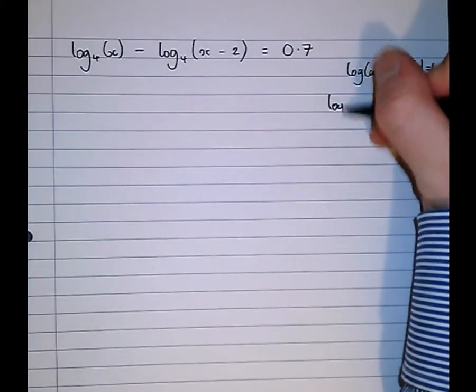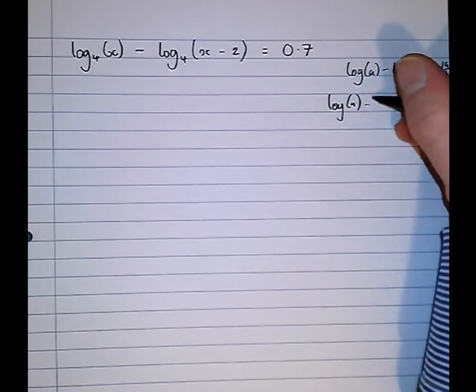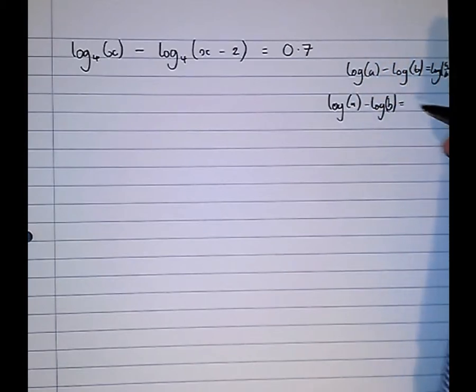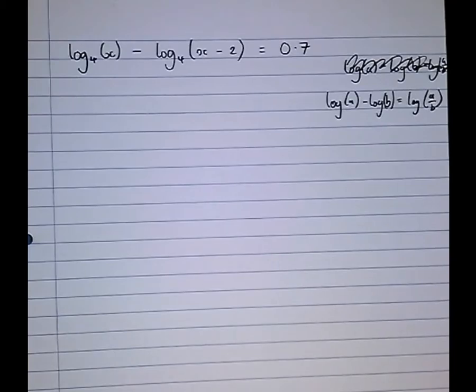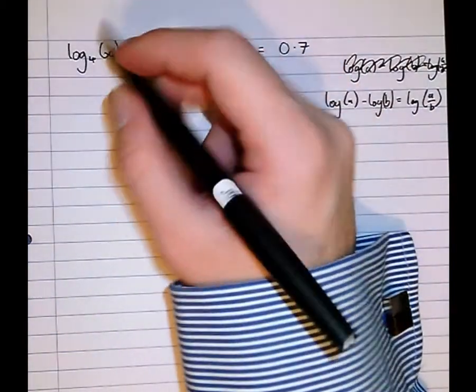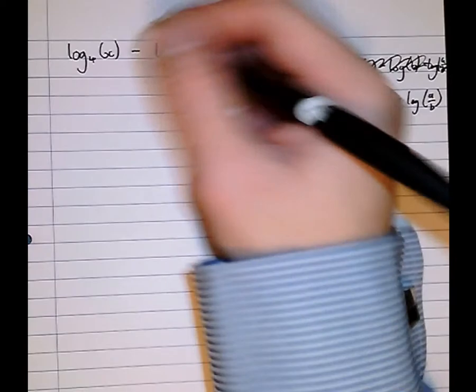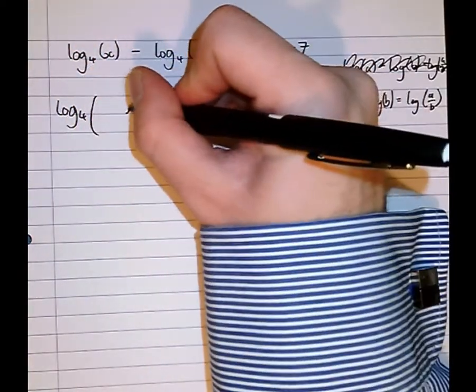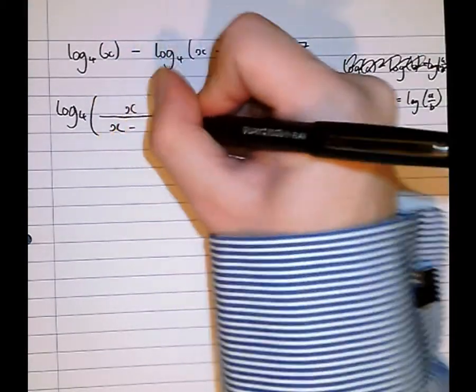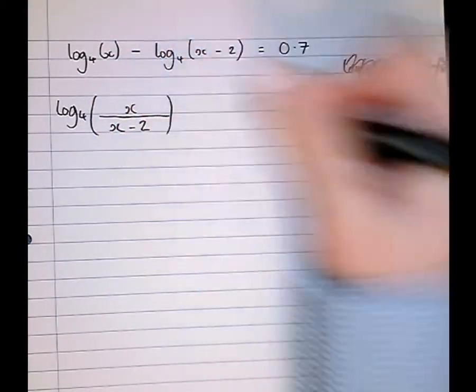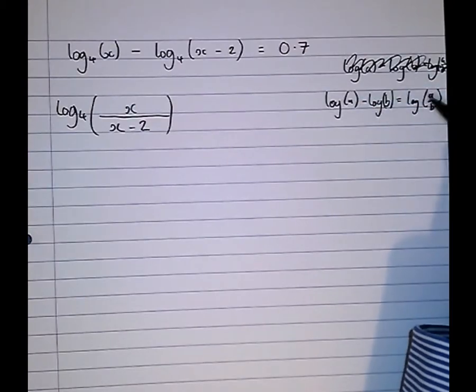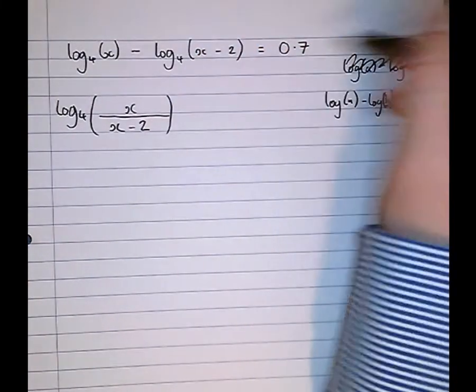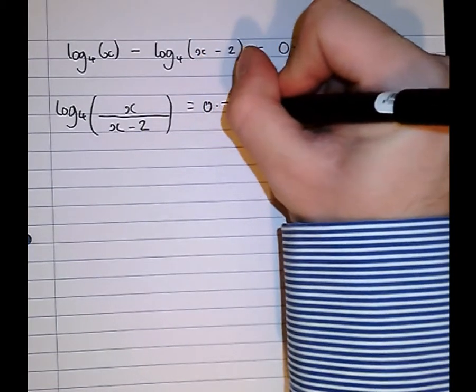So write that more clearly: log a minus log b equals log of a over b. So doing this question now, combining them using that rule, log to the base 4 of x over x minus 2. So what this rule says is that when we subtract two logarithms we divide the contents, provided they've got the same base, equals 0.7.